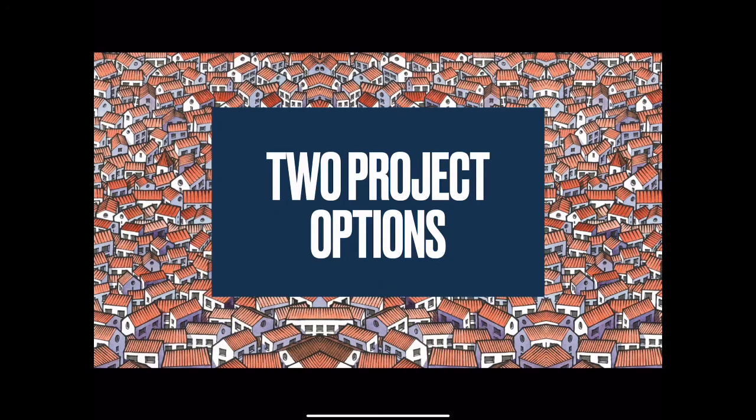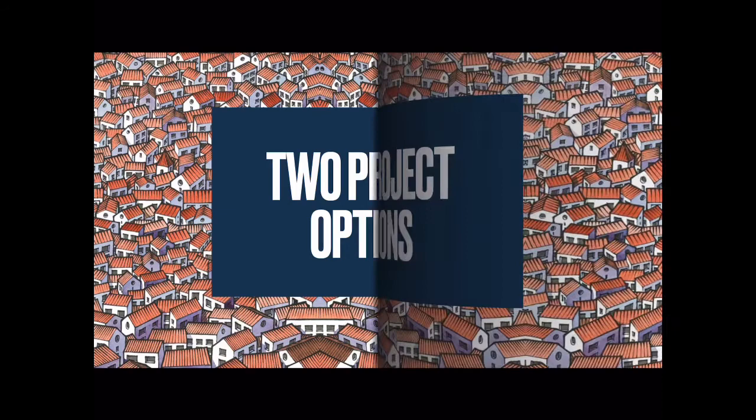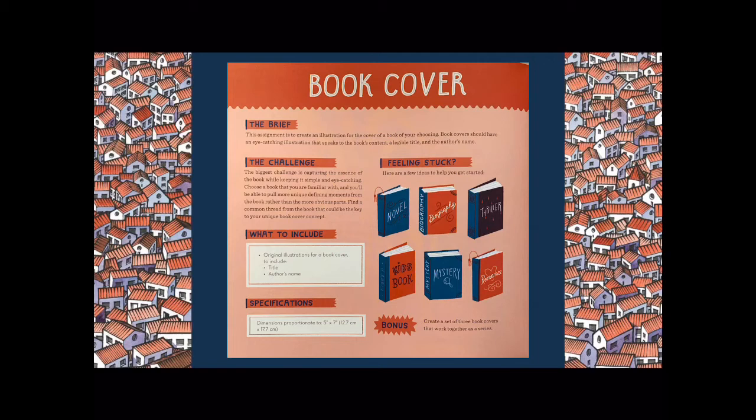So let's just pause and let's look at the two project options you have to choose from. So your first option for this final drawing is to illustrate a book cover. So the brief says that this assignment is to create an illustration for the cover of a book of your choosing. Book covers should have an eye catching illustration that speaks to the book's content, a legible title, and the author's name. The challenge is as follows. The biggest challenge is capturing the essence of the book while keeping it simple and eye catching. Choose a book that you are familiar with and you'll be able to pull more unique defining moments from the book rather than the more obvious parts. Find a common thread from the book that could be the key to your unique book cover concept.